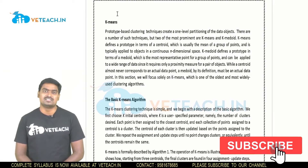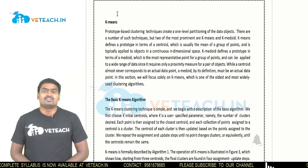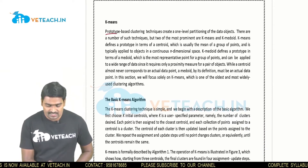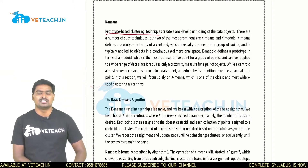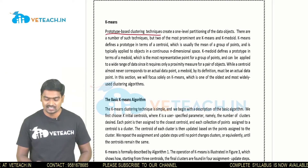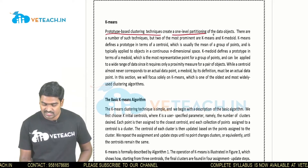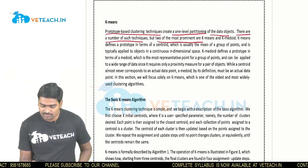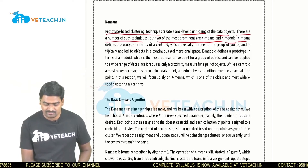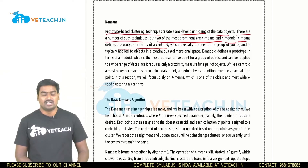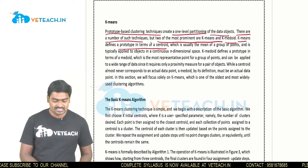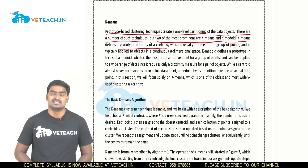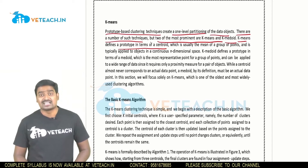Hello students, welcome to VTeach. Today I would like to explain the K-Means algorithm. K-Means is a prototype-based clustering technique — a specific type of clustering technique. It creates a one-level partitioning of the data objects. There are a number of such techniques, but two of the most prominent are K-Means and K-Medoid. K-Means defines a prototype in terms of a centroid. K-Means is used for clustering analysis.